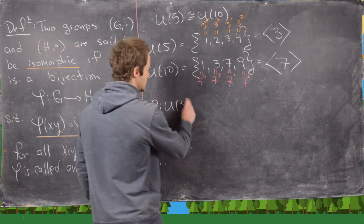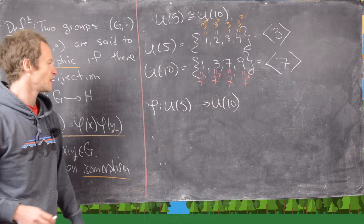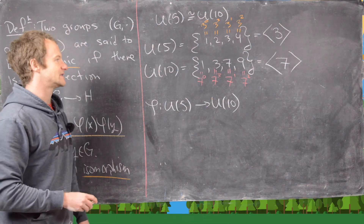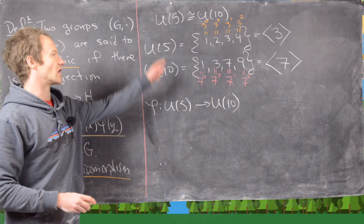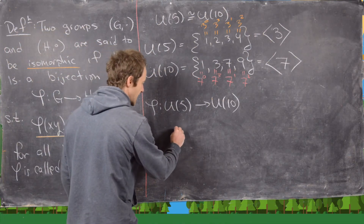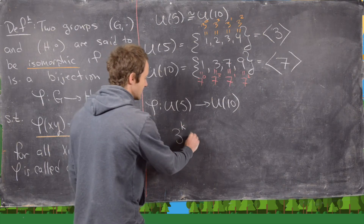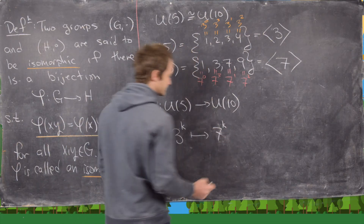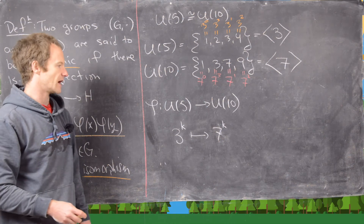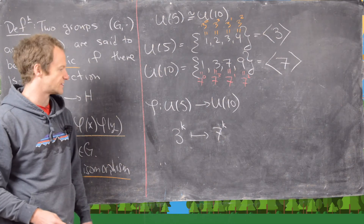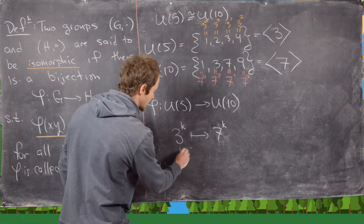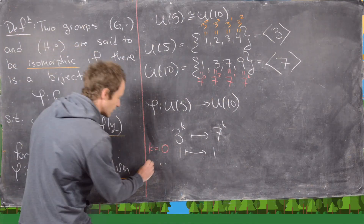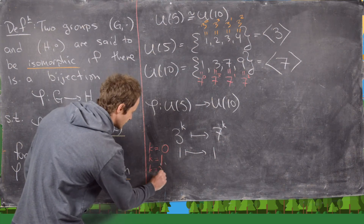This sets up our map phi: U₅ → U₁₀. Writing elements as powers of our generators, we define phi(3ᵏ) = 7ᵏ. This tells us: k=0 sends 1 to 1, k=1 sends 3 to 7, k=2 sends 4 to 9, and k=3 sends 2 to 3.